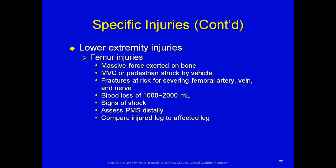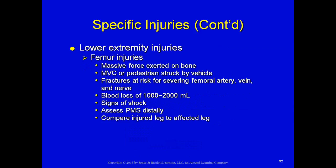Femur injuries require massive force on the longest and strongest bone in the body. They occur in motor vehicle collisions, when struck as a pedestrian, or going over handlebars. These fractures risk severe bleeding from femoral artery and veins and can cause nerve damage. Blood loss could be as much as one to two liters, causing signs of shock. Assess PMS distally, compare to the other leg for swelling and deformity, and immobilize with a Sager or Hare traction splint for mid-shaft femur fractures. If hypotensive with no radial pulses, give a fluid bolus.